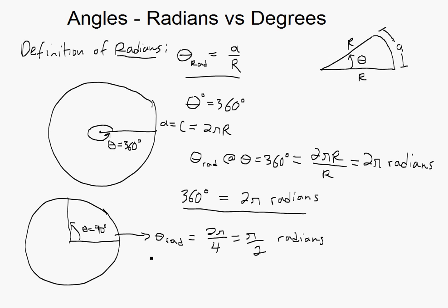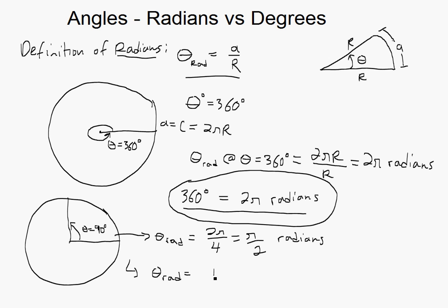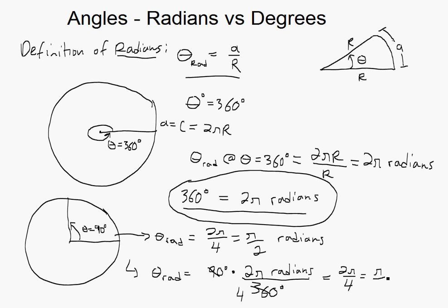But what we could also do is use this ratio. We could go: radians equals 90 degrees times the ratio of radians to degrees, which is 2π radians over 360 degrees. Then 90 over 360 is just 1 over 4, so we get 2π over 4, which equals π over 2 radians.